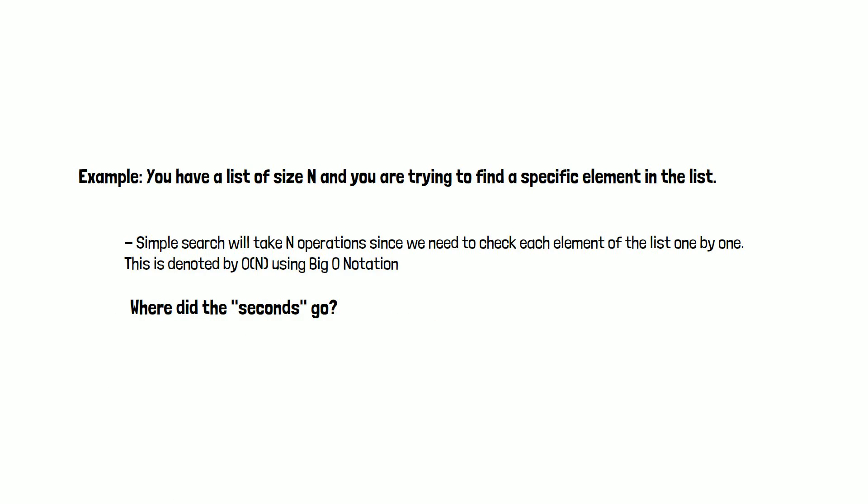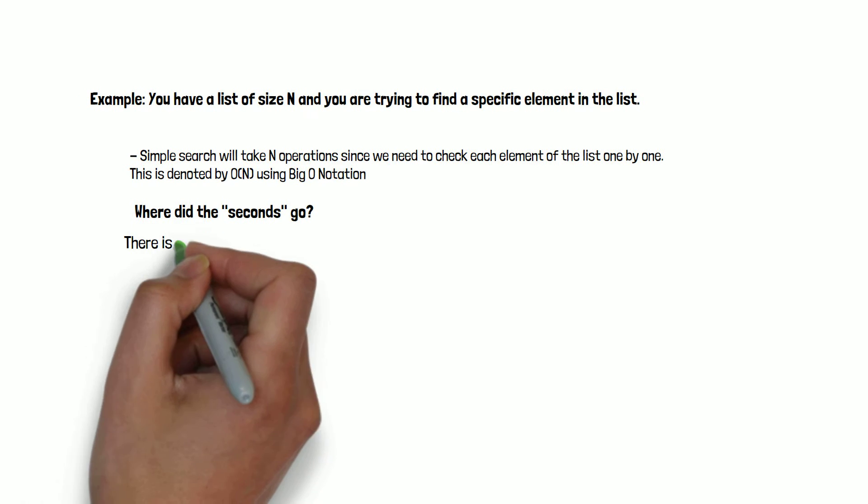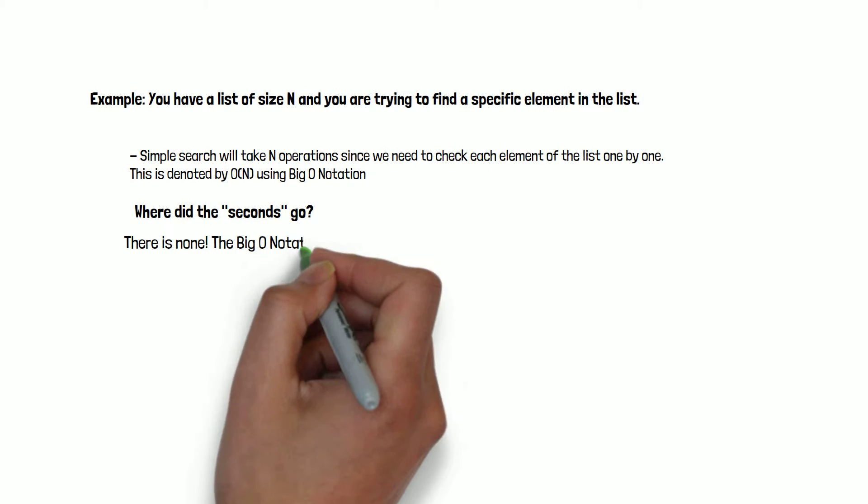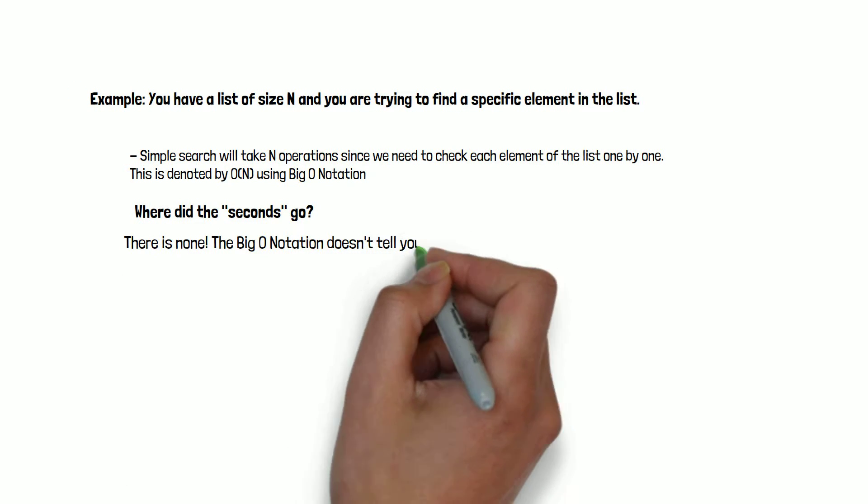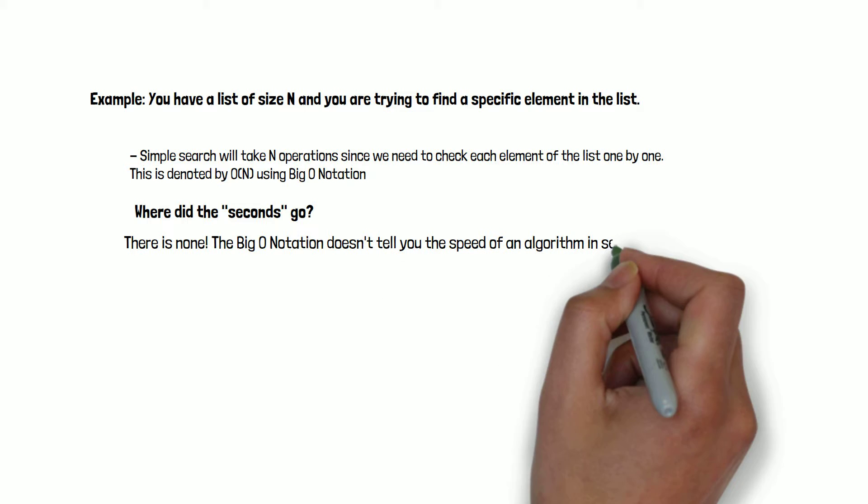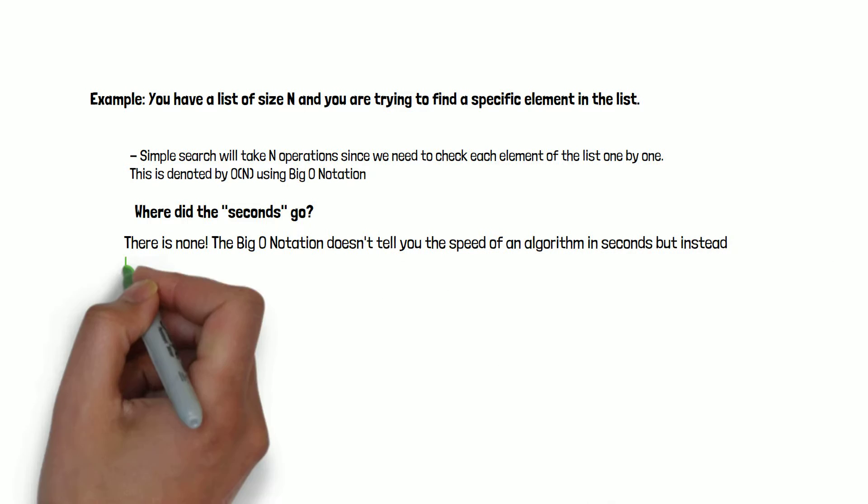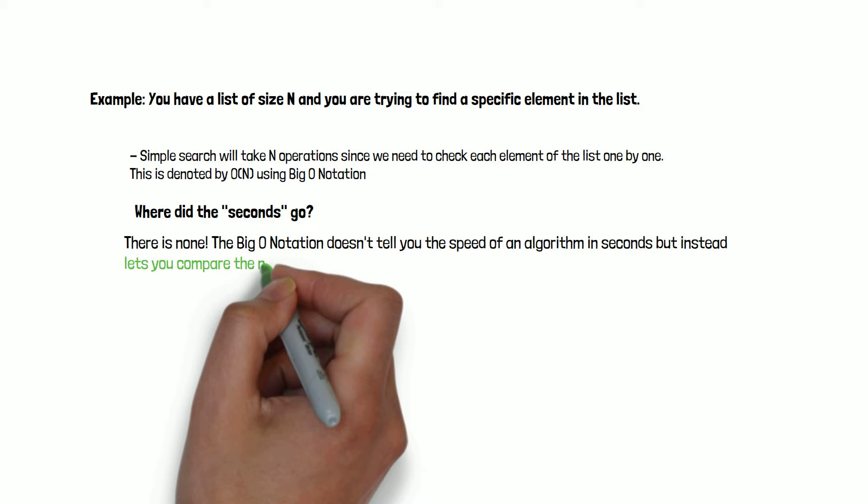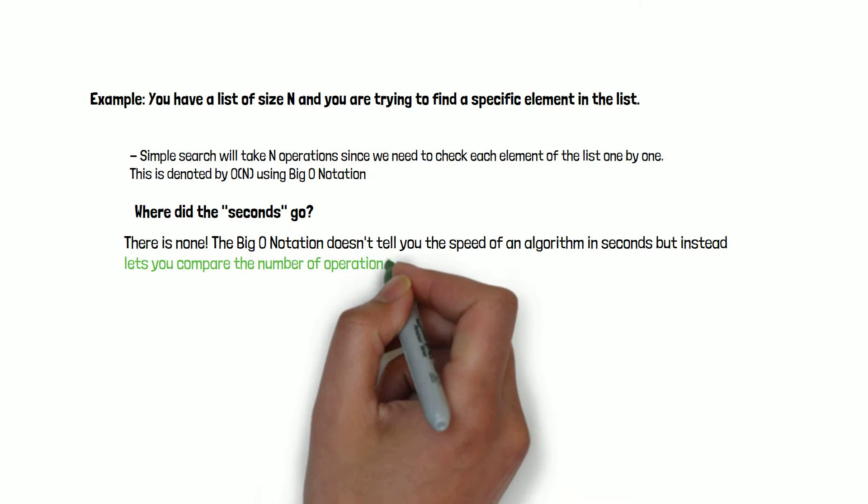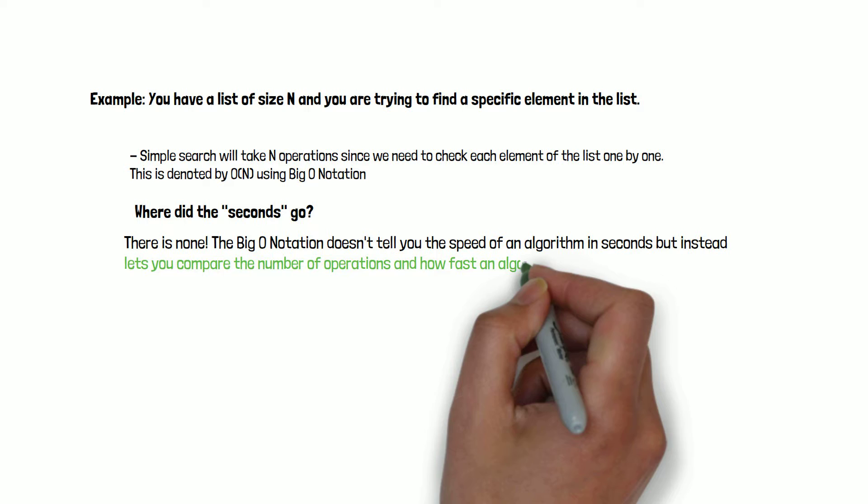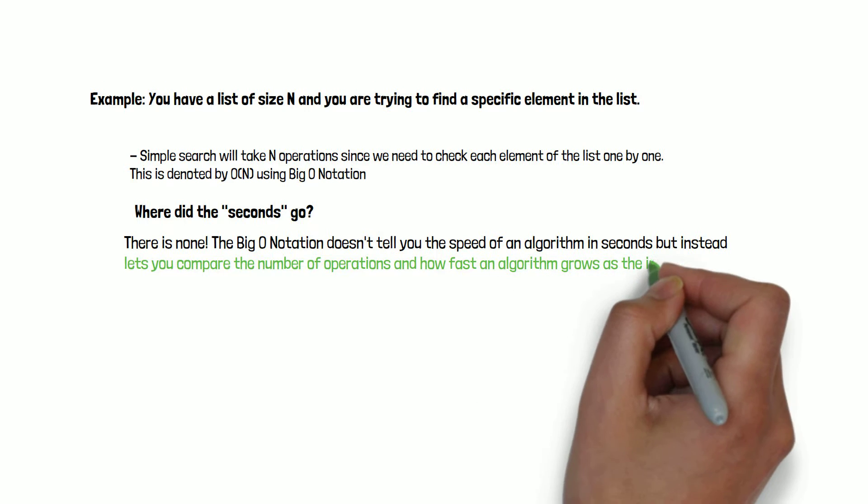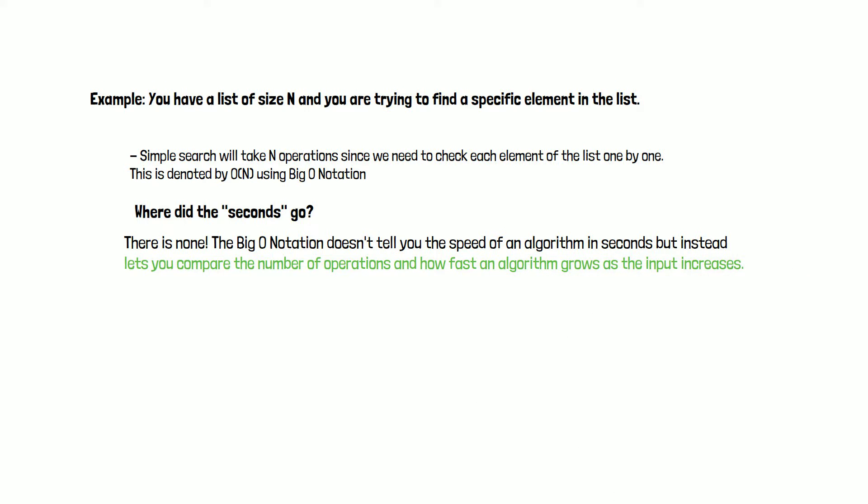You might be wondering, where are the seconds? The answer is that there are none. Big O notation doesn't tell you the speed of algorithms in seconds, but instead, it lets you compare the number of operations. It tells you how fast the algorithm grows as the input size gets larger and larger.